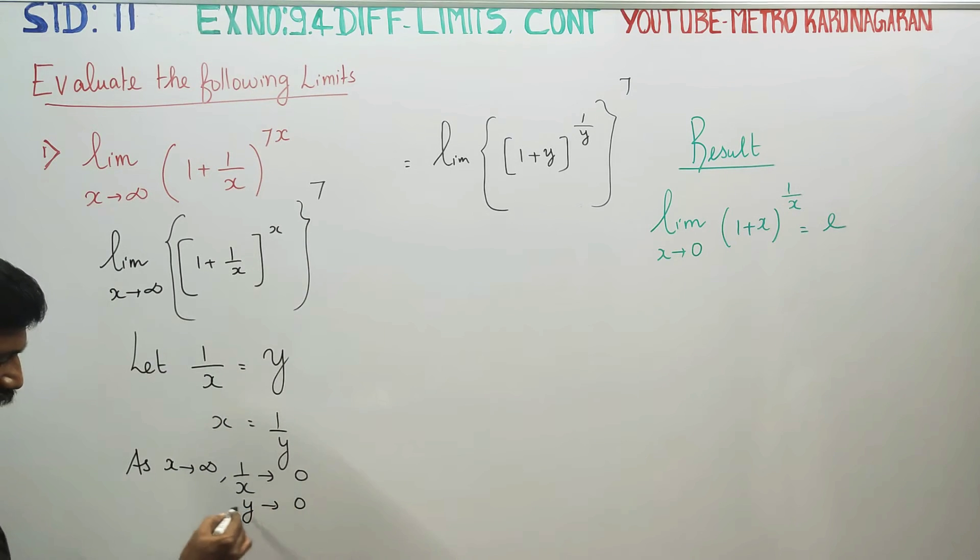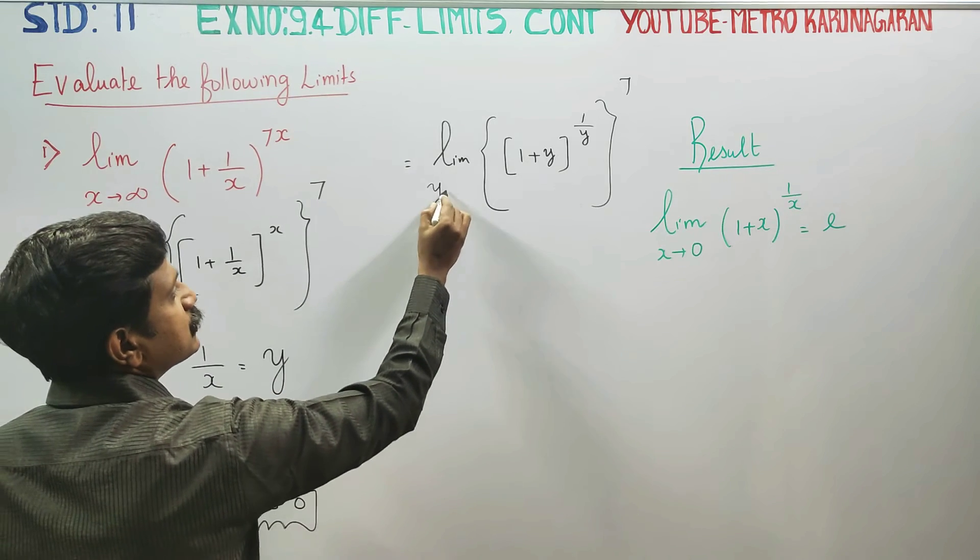As x turns to infinity, y turns to 0. If you use this transformation, we can use this. Then y turns to 0.